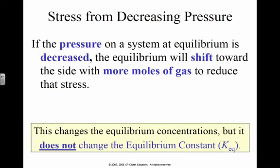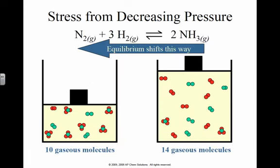If I decrease the pressure, then it's going to shift to the side where there's more moles of gas. For example, if I increase the volume, that'll decrease the pressure. The reaction is going to want to fill that extra space with more gas, so I shift to the side with four moles of gas — one plus three — compared to two moles. Shifting in this direction means producing more nitrogen and more hydrogen, so the concentration of ammonia goes down and there's more hydrogen and more nitrogen.